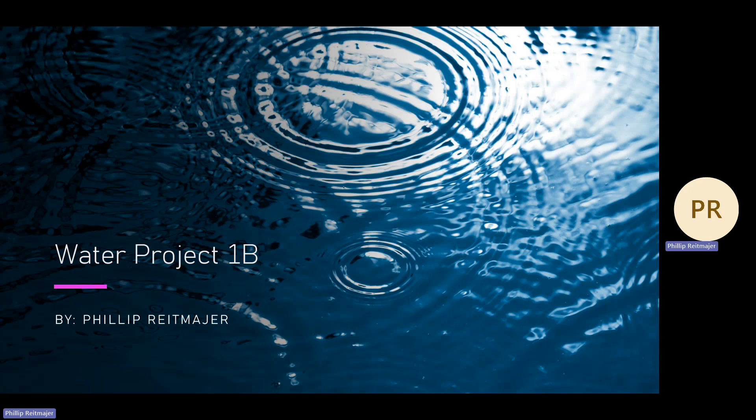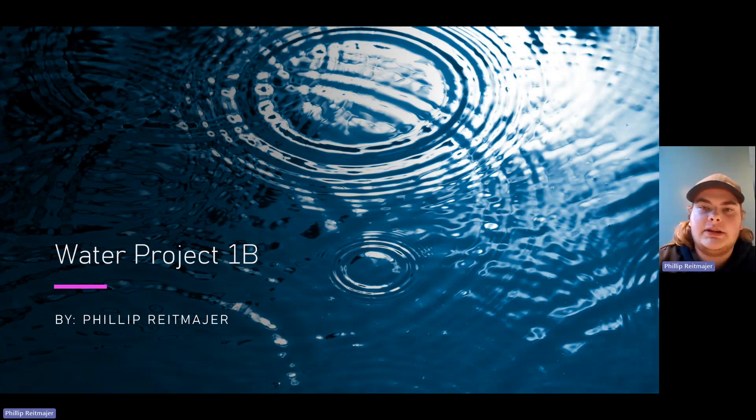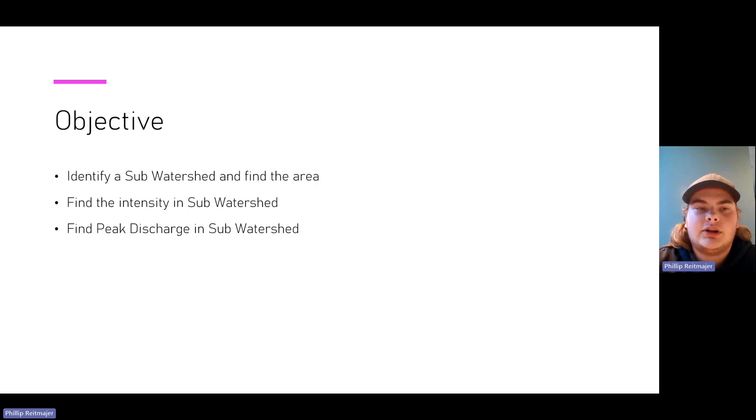Hi, my name is Philip Redmayer and this is my Water Project 1B. My objectives were identifying a sub-watershed and finding the area, finding the intensity of the zone where the watershed resides, and finding the peak discharge of the sub-watershed.